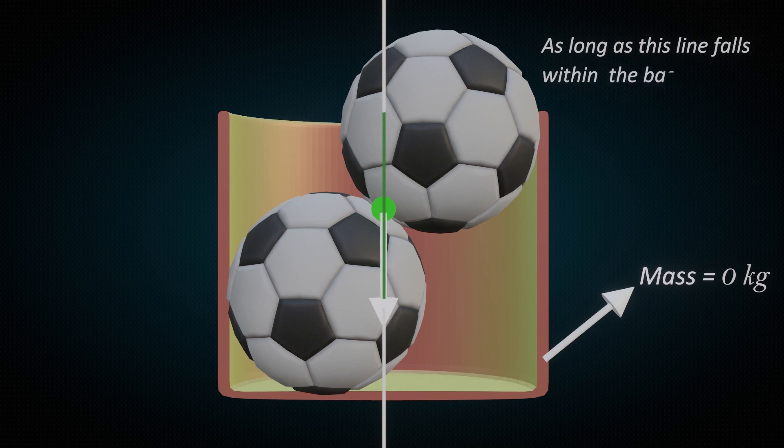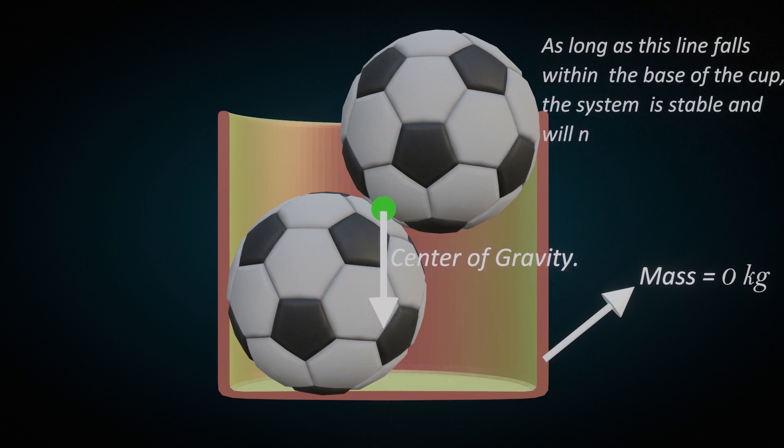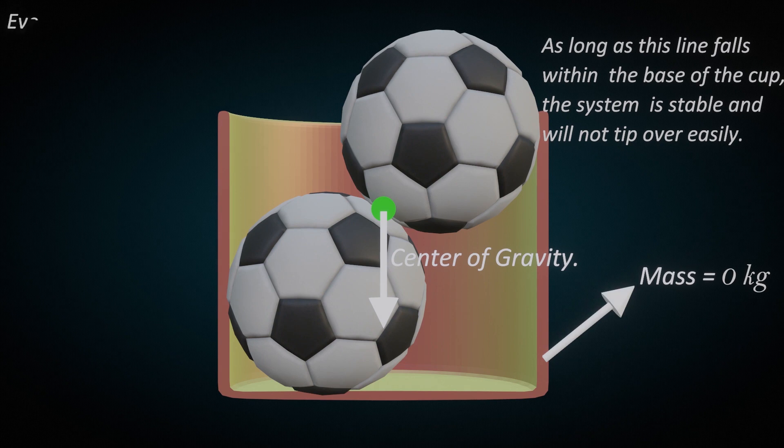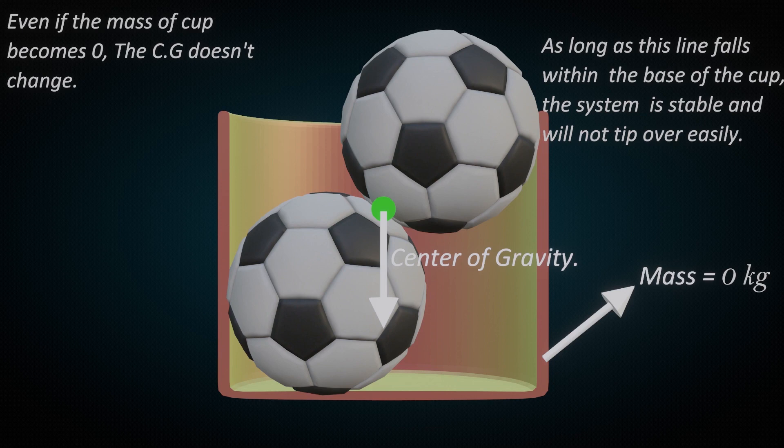As long as this line falls within the base of the cup, the system is stable and will not tip over easily. And even if the mass of cup becomes zero, the center of gravity doesn't change.